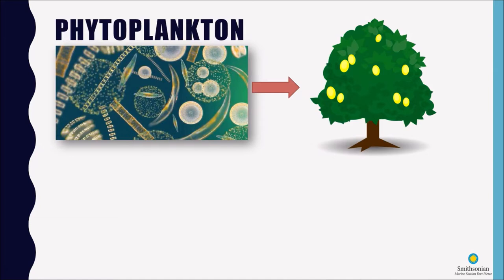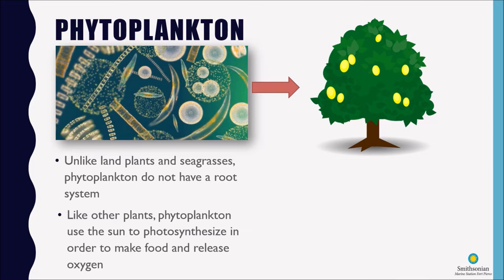They do share some characteristics with plants that we might find on land or some of the plants that we find in water as well. However, unlike land plants and plants in the water like seagrasses, phytoplankton do not have a root system. However, like other plants, phytoplankton do photosynthesize so they use energy from the sun in order to make food and to release oxygen.